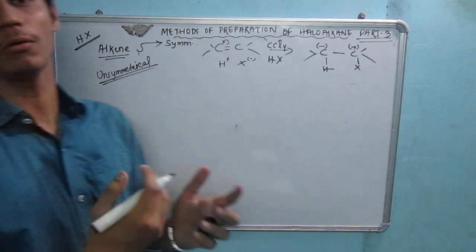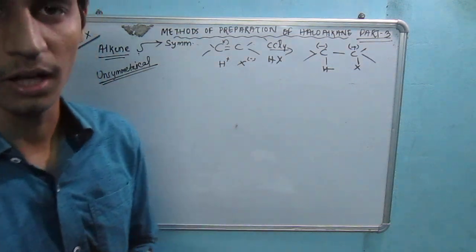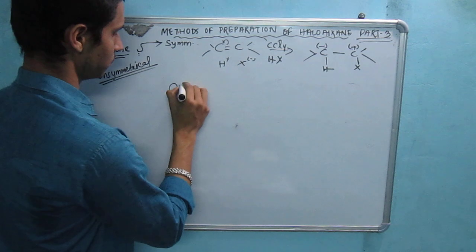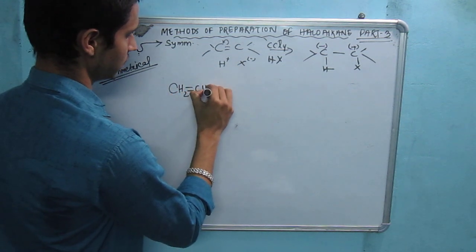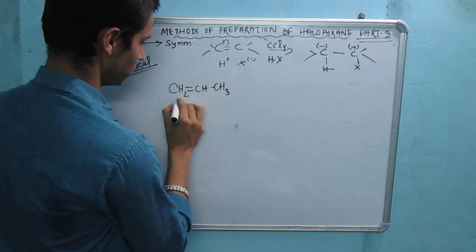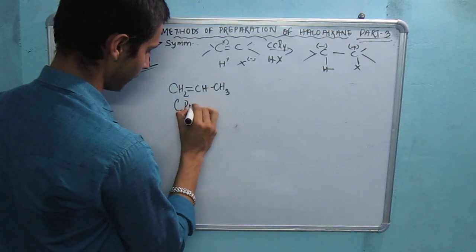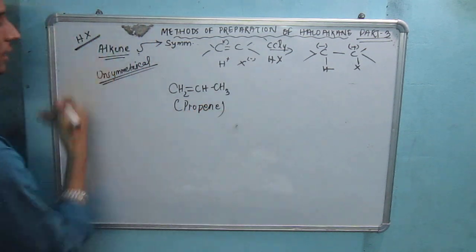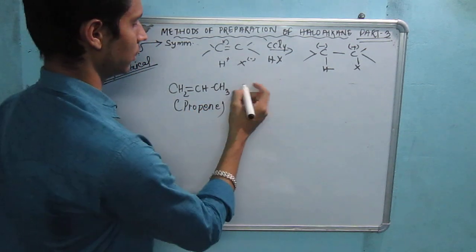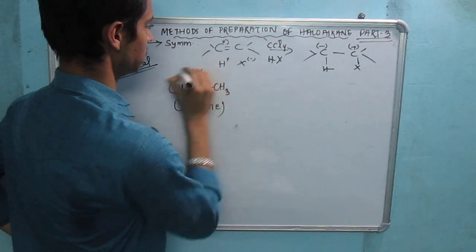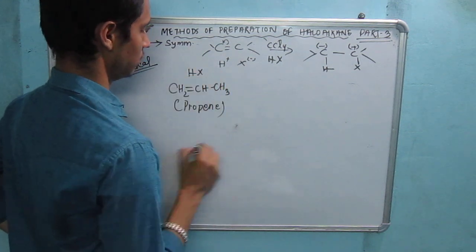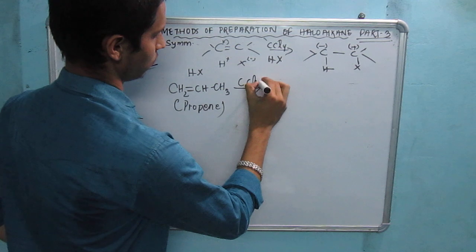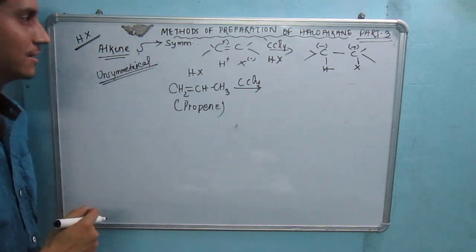For unsymmetrical alkene, let's see how many products we can get. For example, take propene: C2 double bond C1, C3 — propene with an alkane drop. When we add HX in the presence of CCl4, we can get different products depending on where the halogen adds.